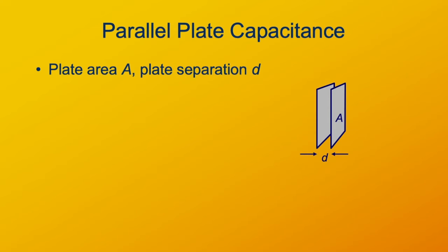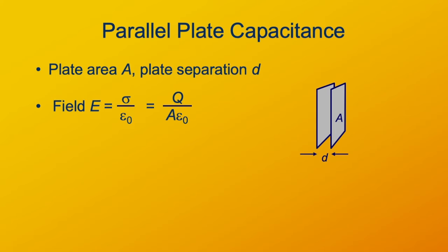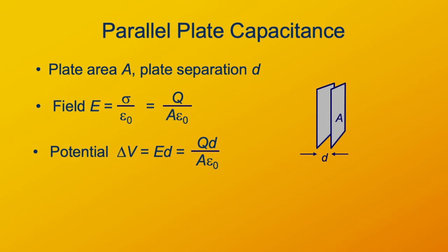To summarize, if we have plate area A and separation D, then the field between the plates is sigma over epsilon naught, or Q over the area times epsilon naught. The potential is the field times D, so we just multiply by the plate separation. And then the capacitance is Q divided by that potential, giving A times epsilon naught over D.